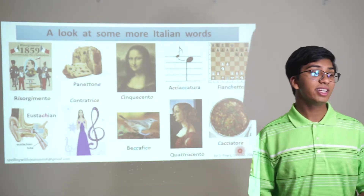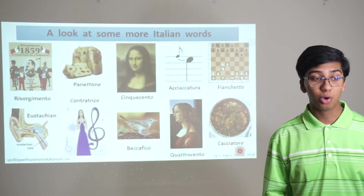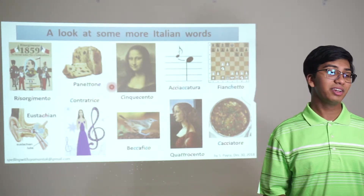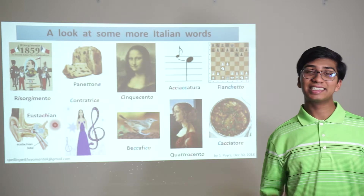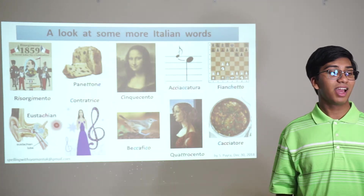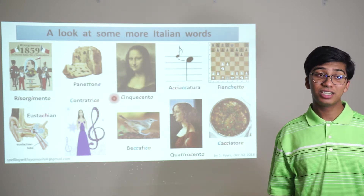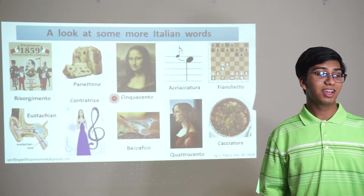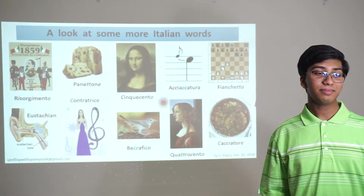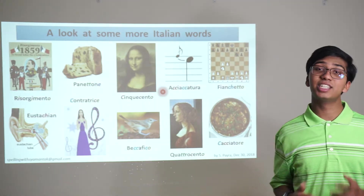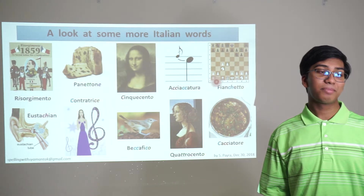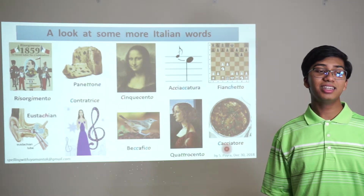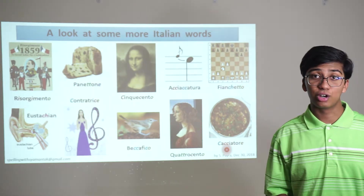Some final Italian words: risorgimento — a time of renewal or renaissance. Panettone — the Christmas bread. Eustachian — the canal inside your ear. Cinquecento — the 16th-century period in Italy with a literary and artistic renaissance. Beccafico — a kind of bird. Acciaccatura — a short grace note attached to a primary note. Fianchetto — a kind of move in chess. Quattrocento. And cacciatore — simmered or stewed with herbs and other seasonings.